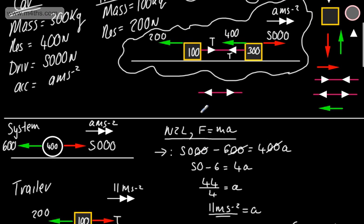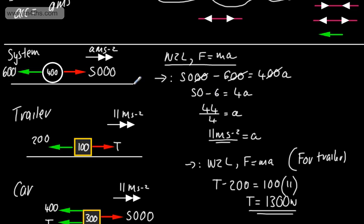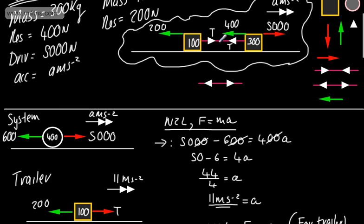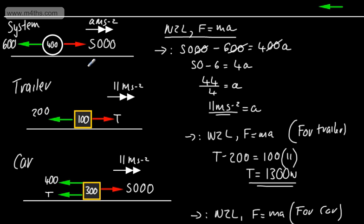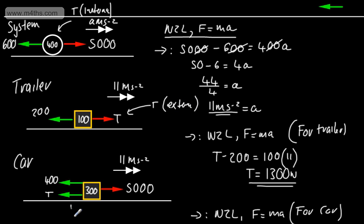So if we've got these two particles moving in a straight line with a coupling or tow bar between them, we can use the system where tensions are internal forces that cancel out, then apply them as external forces when considering each particle separately. At the system stage, T is internal; when considering each particle alone, T is external.